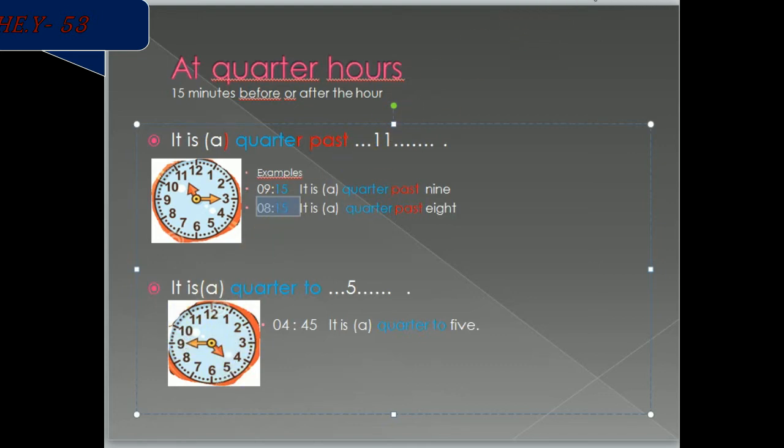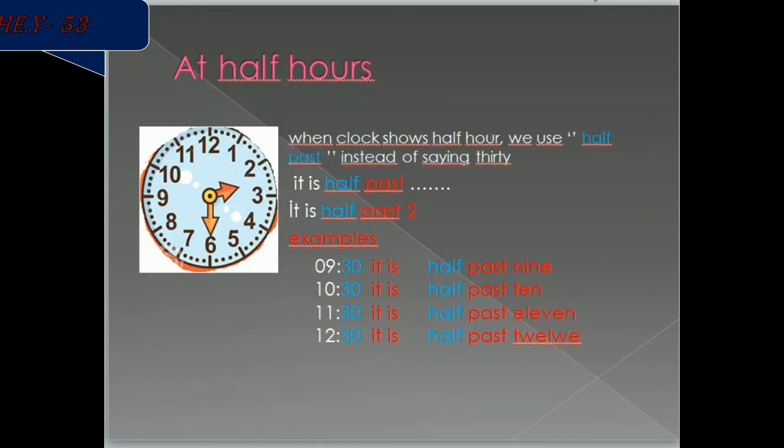When clock shows half hour, we use half past instead of saying 30. According to the clock, it's half past 2. For more examples.